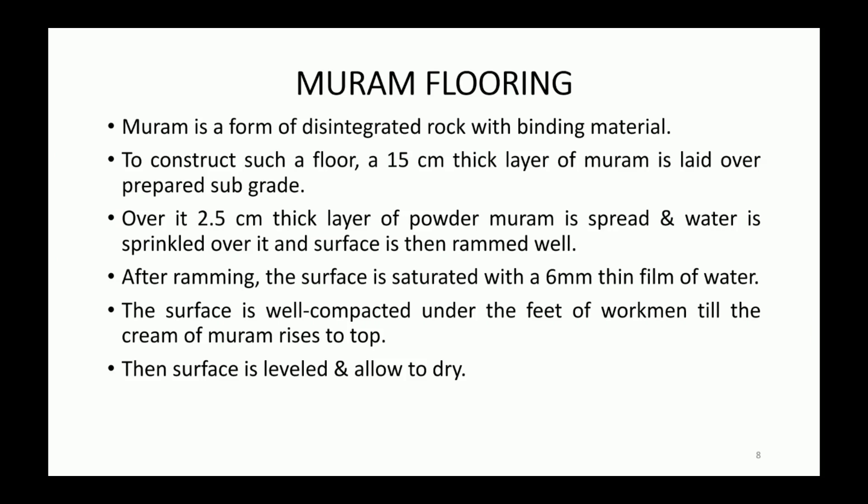The next type is muram flooring. Muram is a form of disintegrated rock with binding materials. To construct such a floor, a 15 cm thick layer of muram is laid over a prepared subgrade. Over it, a 2.5 cm thick layer of powdered muram is spread, water is sprinkled over it, and the surface is rammed well. After that, the surface is saturated with water and well compacted under the feet of workmen until the cream of muram rises to the top. Finally, the surface is leveled and allowed to dry.